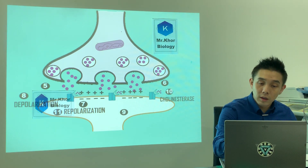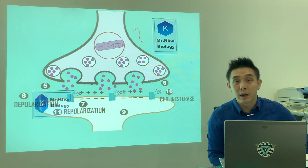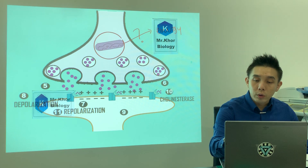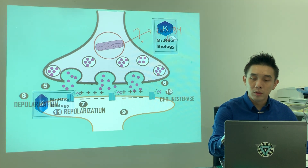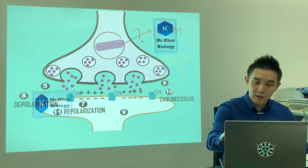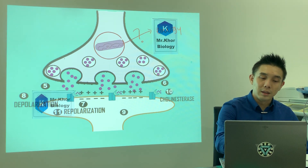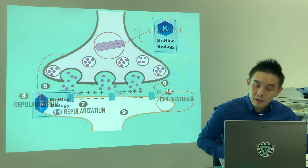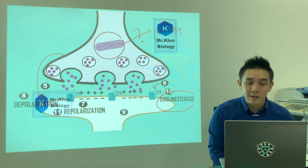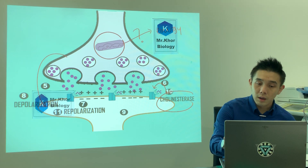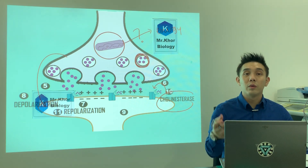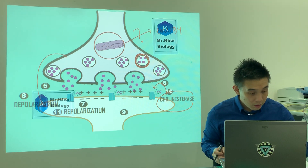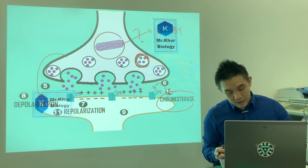One last point: in the exam they can ask you the function of mitochondria. The standard answer is that mitochondria produce energy. This energy helps with: transmission of the impulse across the synapse; helping acetylcholinesterase to break down acetylcholine; and helping to reform the synaptic vesicles again.